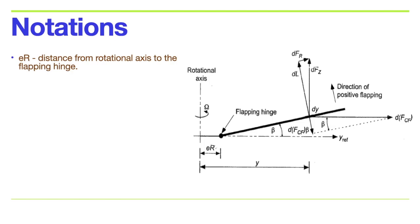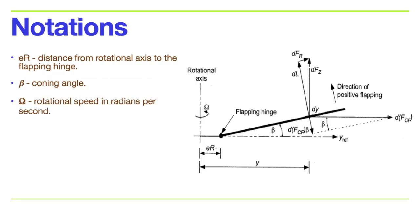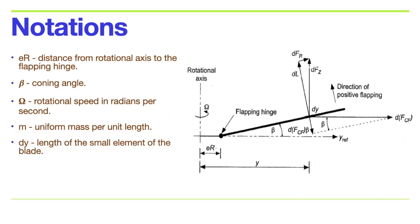First, we assume that the flapping hinge is at the rotational axis. In helicopters with a teetering rotor design, E is equal to 0. The flapping hinge is always offset by a very small distance from the rotational axis, but this does not alter the fundamental physics of the blade dynamics problem. The rotational speed about the axis is omega radians per second, which is constant. We assume a uniform mass per unit length of the blade will be lowercase m, and the mass of the full blade is uppercase M. Consider a small element of the blade of length dy.